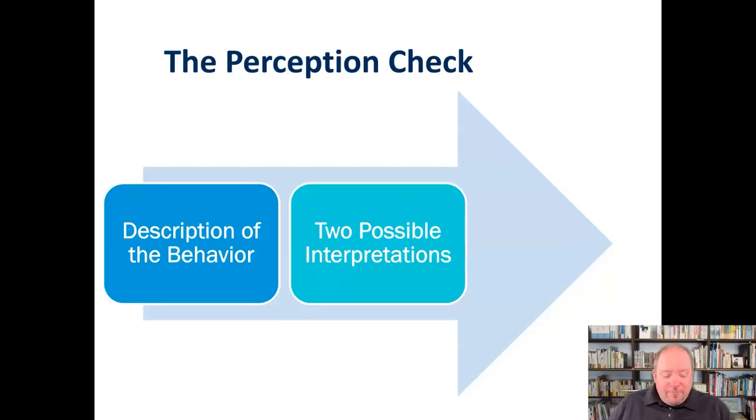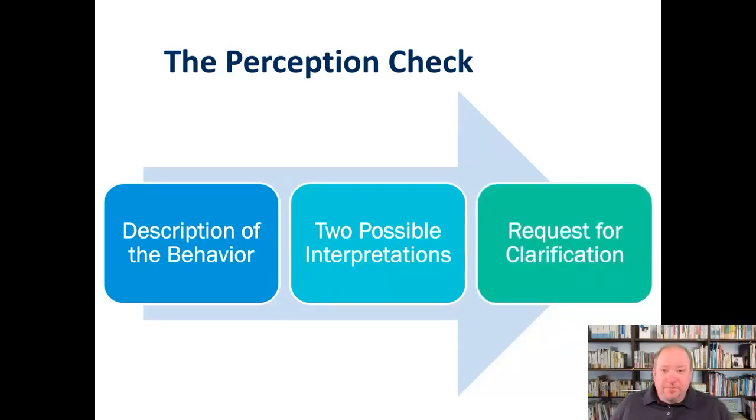Then the third step is very simply just a request for clarification in that situation, just opening the door for them to take over the dialogue and explain from their perspective and share what they're experiencing. That's it, just the three steps: description of the behavior, offering two possible interpretations of that behavior, and then a request for clarification.